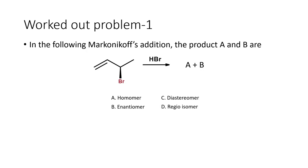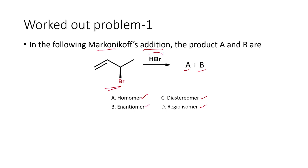Let us look at the first problem. In this question, it is given that in the following Markovnikov addition reaction, products A and B are obtained. We have to determine whether these two products are homomers, enantiomers, diastereomers, or regioisomers. The starting material is given and the reaction is Markovnikov addition — that is, addition of HBr to an alkene double bond.